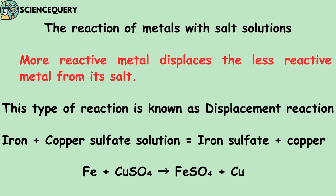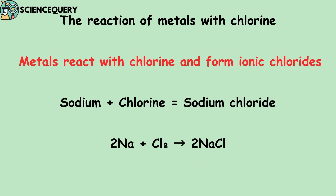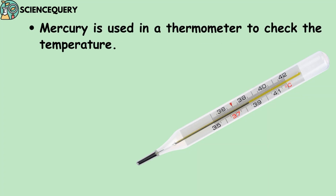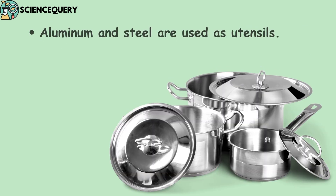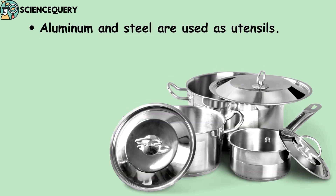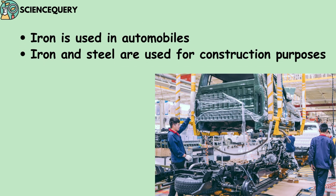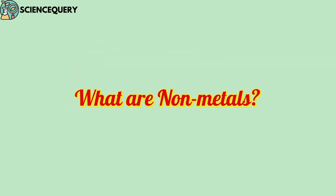The next chemical property is the reaction of metals with chlorine. Metals react with chlorine and form ionic chlorides. For example, sodium reacts with chlorine to form sodium chloride. Now let us see the uses of metals in our day-to-day life. Mercury is used in thermometers to check temperature. Aluminum and steel are used in utensils. Gold, silver, and platinum are used for jewelry and ornaments. Iron is used in automobiles, and iron and steel are used for construction purposes.